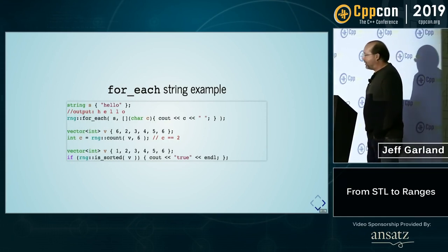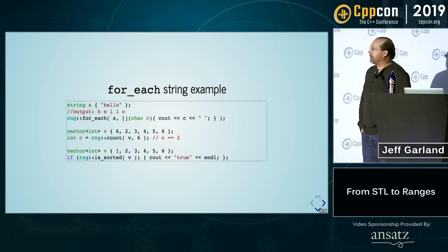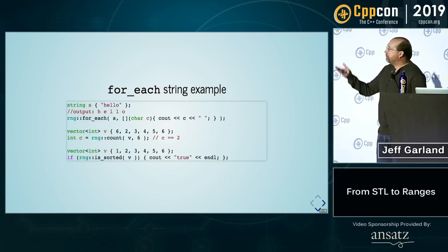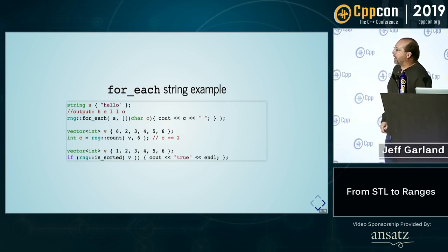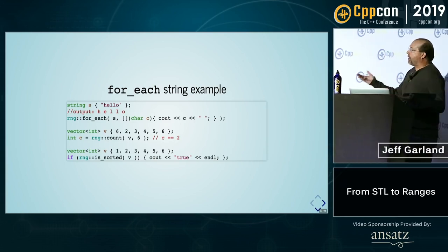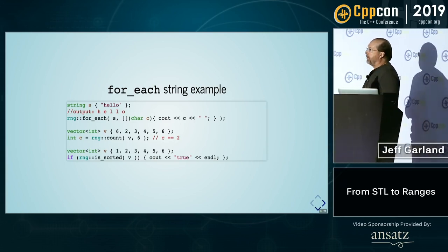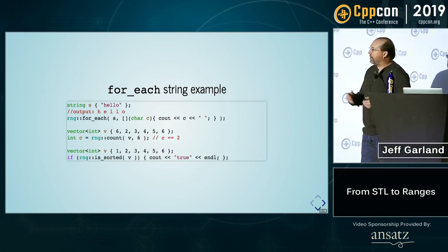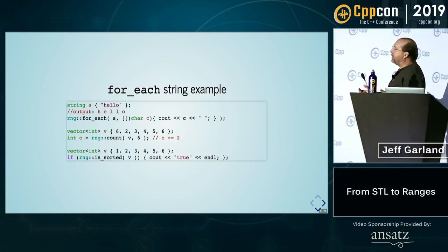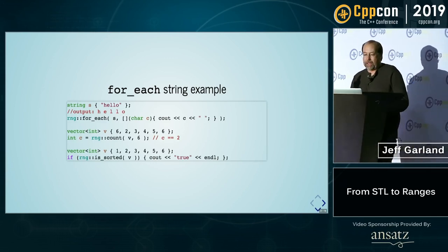I think there's nothing mysterious about this at all — these are easy to understand. The for_each we've already seen. The count on the second line: again, all you're really losing there is the begin and end on the count algorithm. Is_sorted is another standard algorithm today, and again the only difference is you're losing the begin and the end.